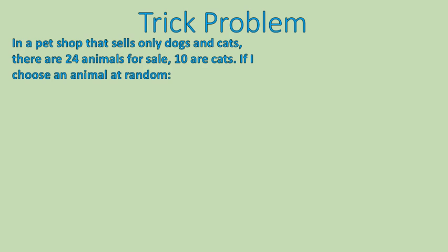Our final question is a bit of a trick question. So try and see the trick in this. In a pet shop that sells only dogs and cats, there are 24 animals for sale. Ten are cats. If I chose an animal at random, I want you to solve for the probability that that animal will be a dog. The challenge and trick with this is right here. I never gave you the number of dogs. I never told you how many dogs there were in this pet shop.